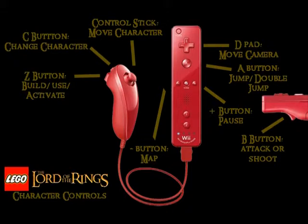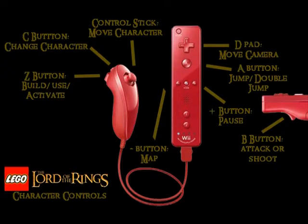If you press the B button on the Wii Remote itself, you will attack or shoot. If you hold it down — shooting is mostly for arrows — you can shoot arrows anywhere there's a target by moving the Wii Remote around. You'll have a little target on screen, move the Wii Remote around, and then you can select certain objects.